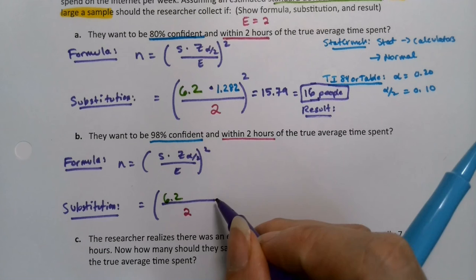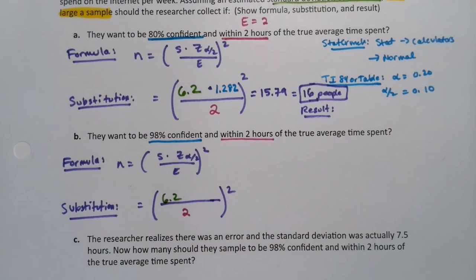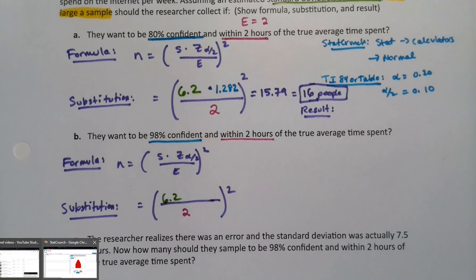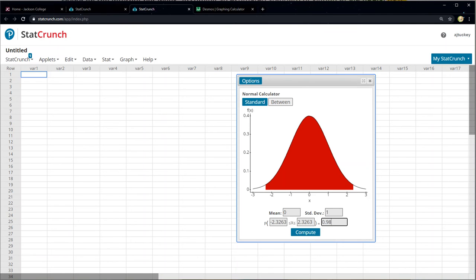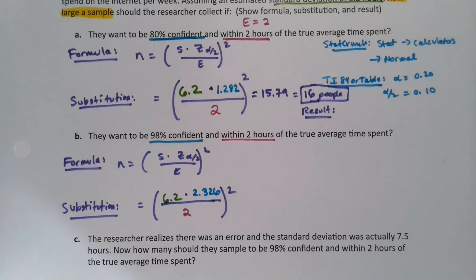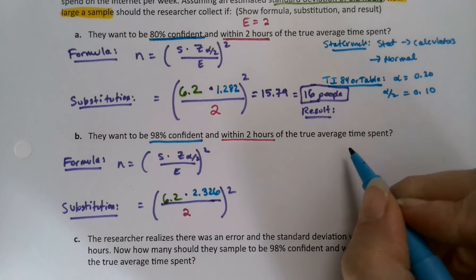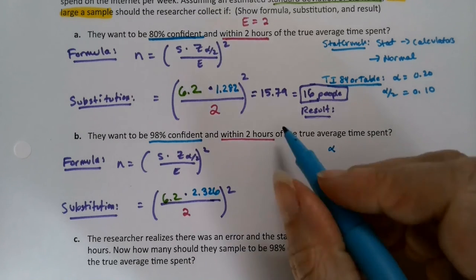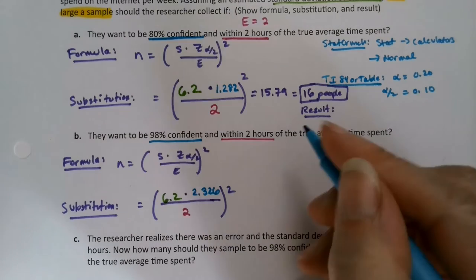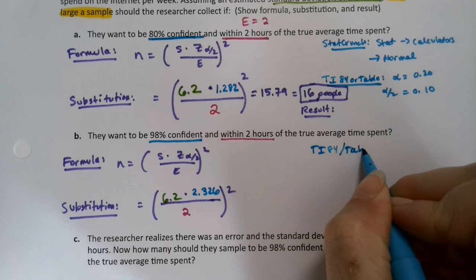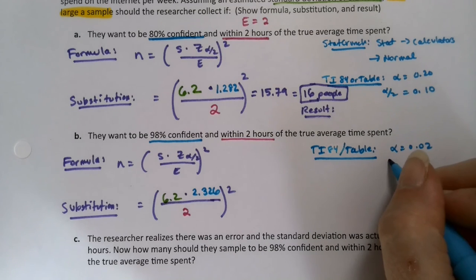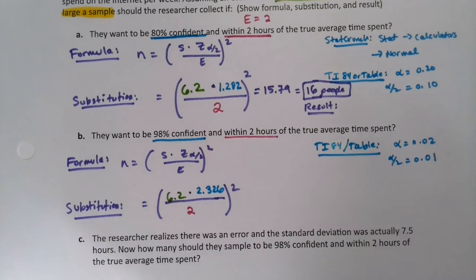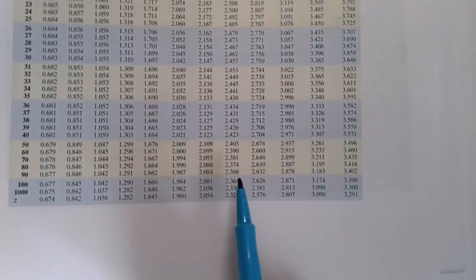So one more time, we're going to go to the calculator and figure this out or to StatCrunch. StatCrunch is easier. So if I grab StatCrunch and I make this area 0.98 in the between zone and press enter, I can see that it's 2.326. If you're going to use the table or the TI-84, then you would need alpha, which is 0.02, because 2% and 98% make 100%. So alpha over two is 0.01. If you go to the 0.01 column on your table, drop to the bottom, it's 2.326.